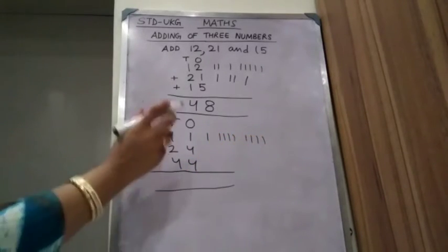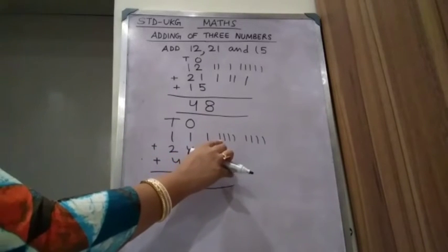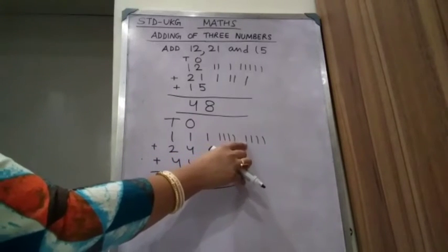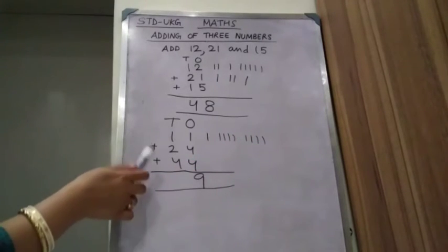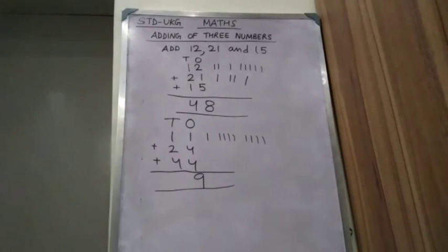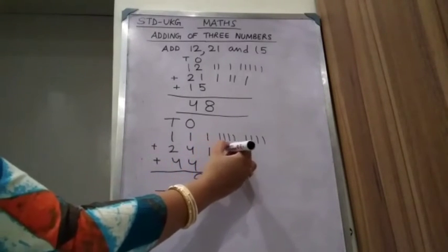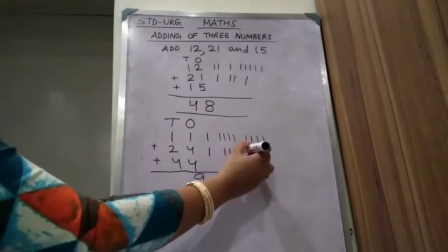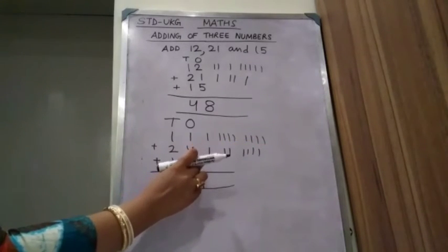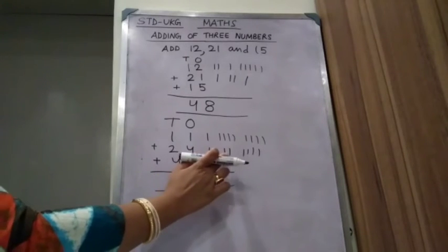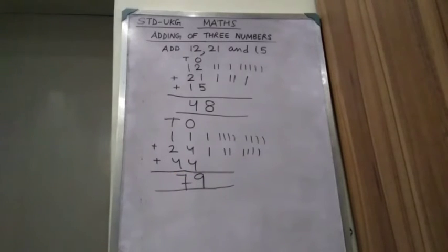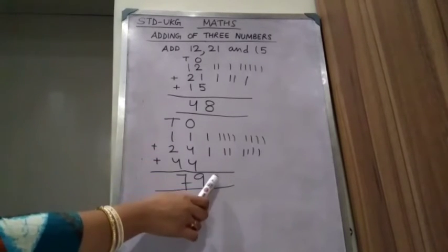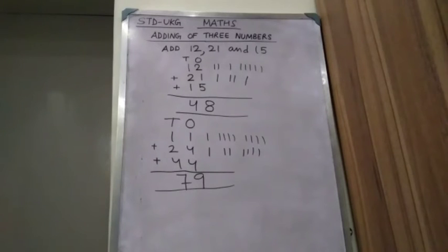Now count all together: 1, 2, 3, 4, 5, 6, 7, 8, 9. So write 9 in the ones column. Next, count the tens column. The numbers are 1, 2, 4. Count: 1, 2, 3, 4, 5, 6, 7. The answer is 79 — 7 tens, 9 ones.